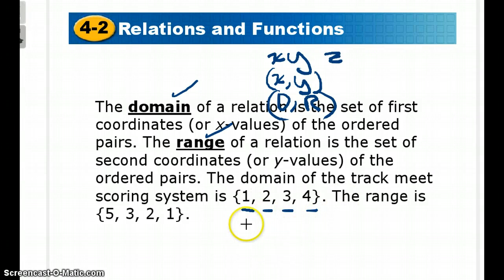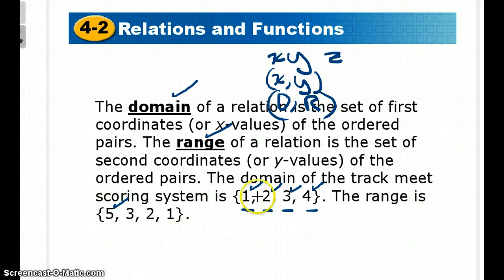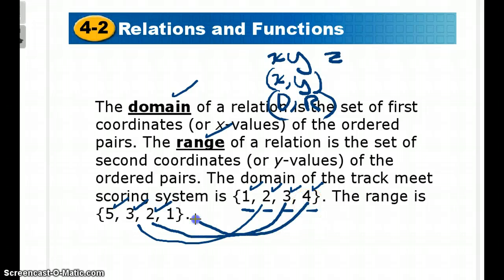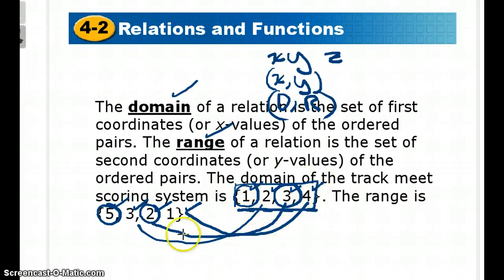Domain basically says: what are my options, what are my choices? In a track meet, you can come in first, second, third, or fourth. Range is what's the outcome of that. If you come in first, you get 5 points; second, 3 points; third, 2 points; fourth, 1 point. So every time you come in third, you'll receive 2 points, and every time you come in first, you'll receive 5 points. My domain is my choices, and my range is my output values, and everything comes back into an ordered pair.